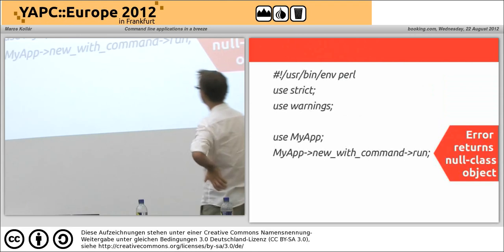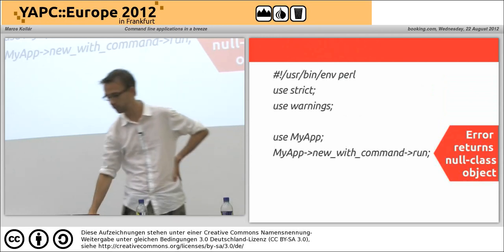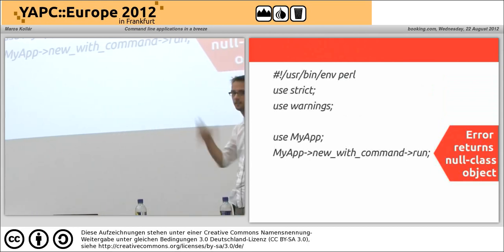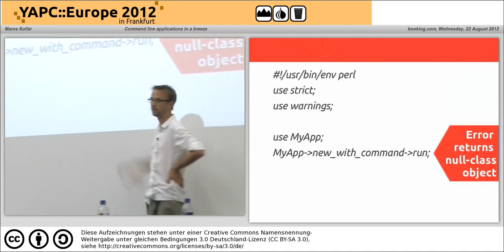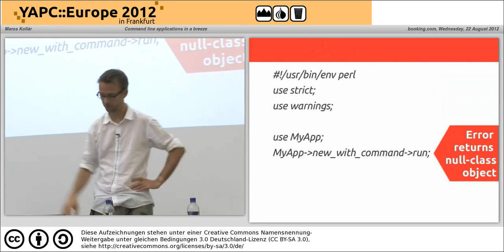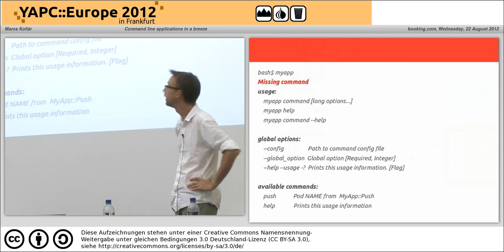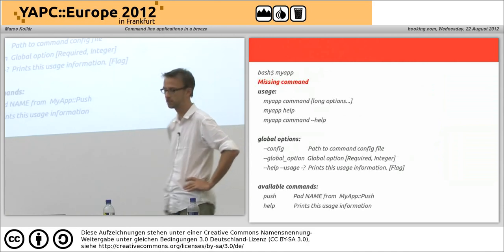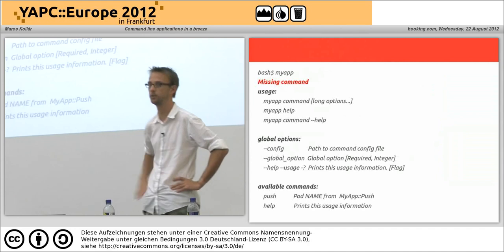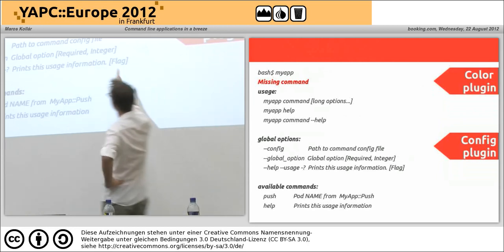The key difference is that if 'new_with_commands' fails, it does not exit — unlike the other two. Instead it returns a Moo class object containing an error message. Because it adheres to the Moo class pattern, you can call any methods on it, so you don't have to care whether 'new_with_commands' was successful or not. If you just type 'my_app' on the command line, it would show 'missing command' in bold and red because I'm using the color plugin.